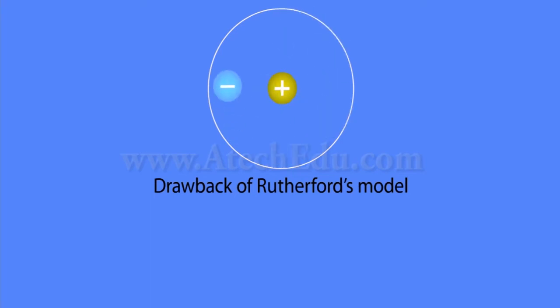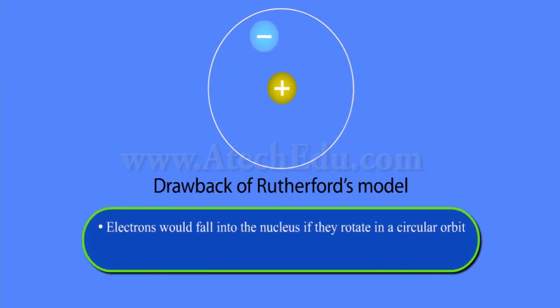There was a major drawback in Rutherford's model. According to him, the electron revolves in a circular orbit. Anything which undergoes acceleration would radiate energy and should fall into the nucleus.